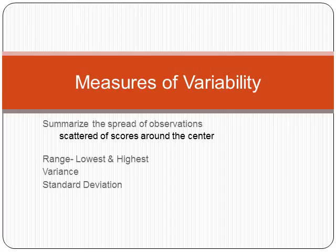Measures of variability summarize the spread of our observations — we have scatter in our data. We can consider measures like the range, the variance, and the standard deviation. The range is very basic: it's the difference between the lowest and highest scores. Not very informative and can sometimes be misleading. In our previous example, scores ranged from 0 to 6, giving a range of six — but it doesn't provide much detail beyond that.